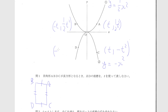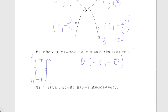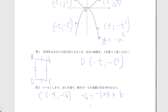長方形になるということはAとB、CとDの長さが等しく、ACとBDの長さが等しいということです。DとCがY軸に対して線対称な位置にあるので、Dの座標は(-t, -t²)です。問: t = 4 とします。点Cを通り、傾きが -3 の直線の式を求めなさい。CのX座標は4、Y座標は -16。-16 = -3×4 + b を解くと b = -4。よって式は y = -3x - 4。